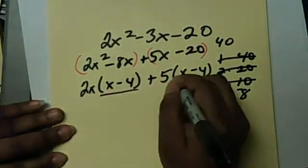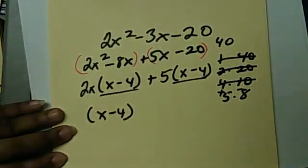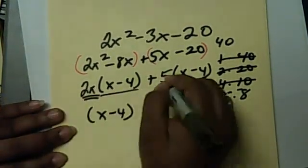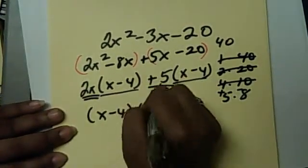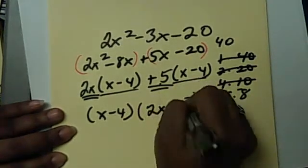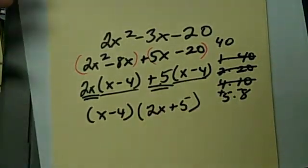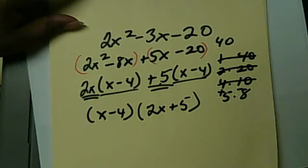Our final answer will be the stuff that we have together, X minus 4. And then the stuff that's left on the outside, which is 2X plus 5. And that is how you factor using the AC method.